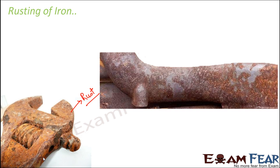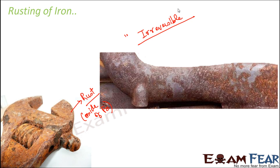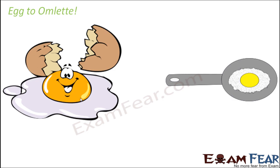In rusting, iron tends to react with moist air — that is, with water and air — to form an oxide of iron, which is called rust. So rust is nothing but an oxide of iron. This rust formation takes place in the presence of moist air. It is a change because earlier it was a shiny iron object and now it has a layer of rust. This process is irreversible because a lot of chemical reactions take place, a new substance is formed — the oxide of iron — and we cannot get back normal iron from oxide of iron.